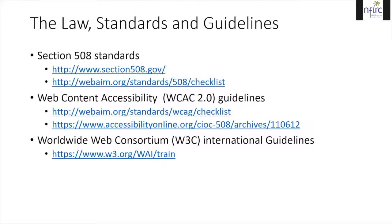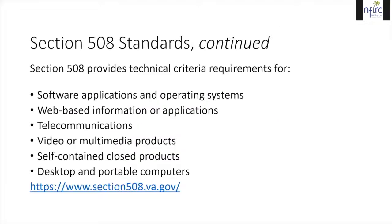Section 508 of the Rehabilitation Act of 1973, as amended in 1998, establishes guidelines for technology accessibility. Section 508 requires that when federal agencies develop, procure, maintain, or use electronic and information technology, federal employees with disabilities have access to and use of information and data comparable to those who are not individuals with disabilities, unless an undue burden will be imposed on the agency. They provide technical criteria requirements for software applications and operating systems, web-based information or applications, telecommunications, video or multimedia products, self-contained closed products, and desktop and portable computers.